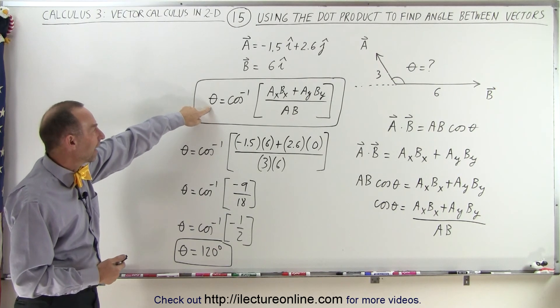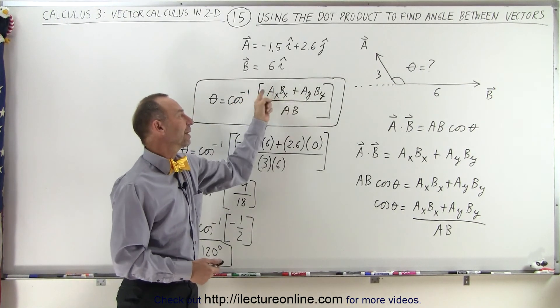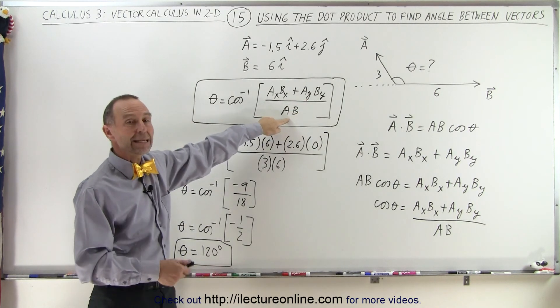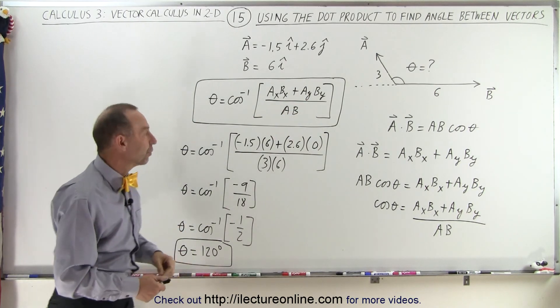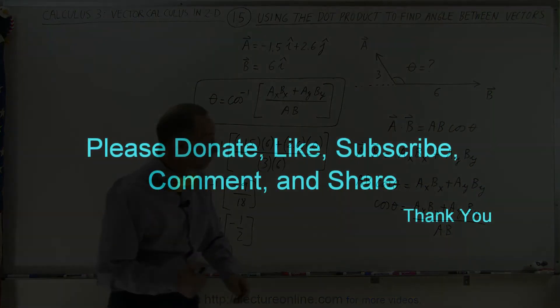Now notice, simply the equation becomes that the angle theta is equal to the inverse cosine of the one method to find the dot product, divided by the product of the magnitudes of the two vectors. And that's how it's done. Thank you.